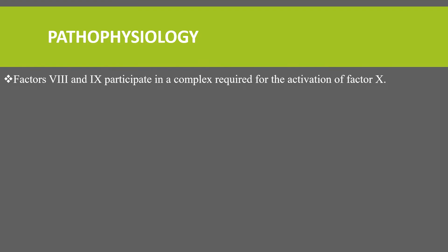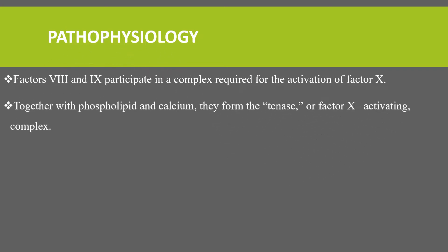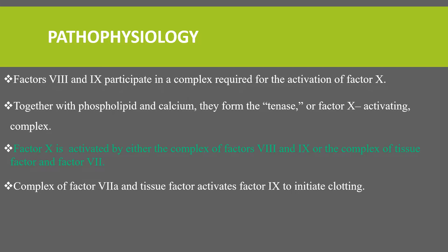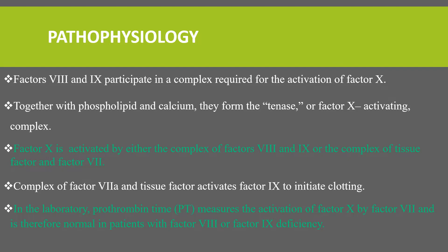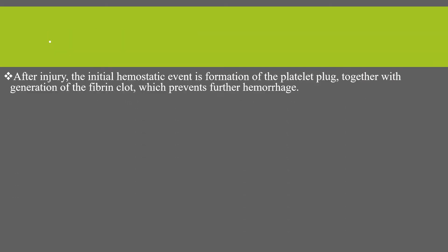In the pathophysiology of hemophilia A and B, factor 8 and factor 9 participate in a complex required for the activation of factor 10. Together with phospholipid and calcium, they form the tenase, or factor 10 activating, complex. Factor 10 is activated by either the complex of factor 8 and 9, or the complex of tissue factor and factor 7. In the laboratory, prothrombin time measures the activation of factor 10 by factor 7, and is therefore normal in a patient with hemophilia, because hemophilia is due to factor 8 and factor 9 deficiency, which does not affect the PT.